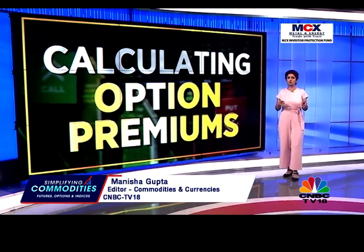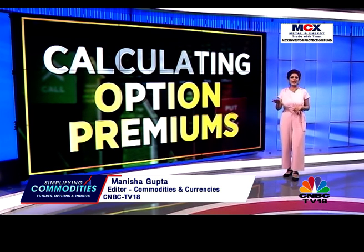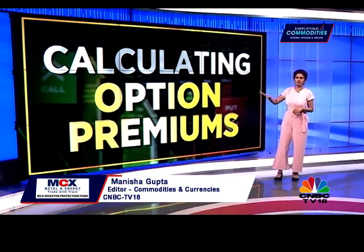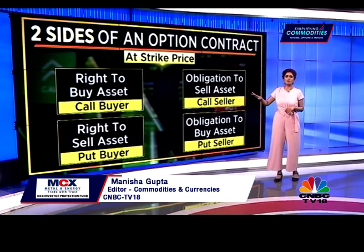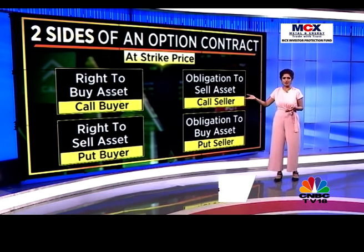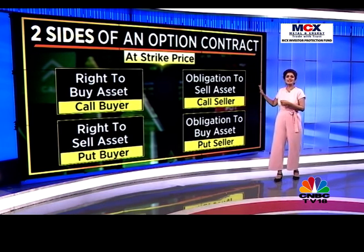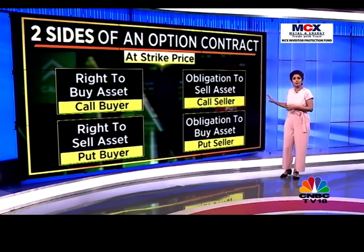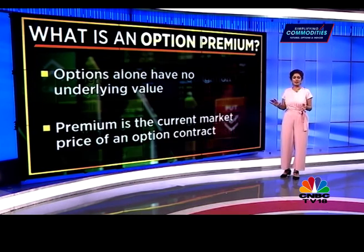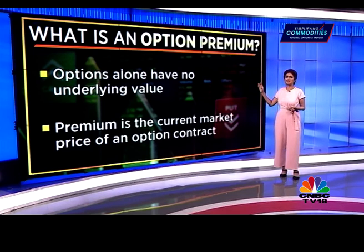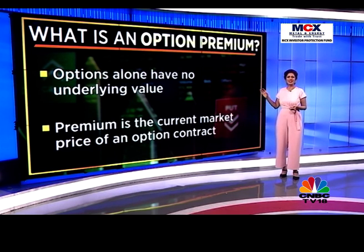Remember, there are two parties to an options contract: buyer and seller. The buyer of an options contract has the right to buy or sell an asset at the strike price, while the seller has an obligation. To trade an option, you need to pay a premium, as options themselves have no underlying value.